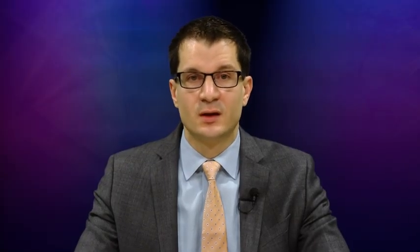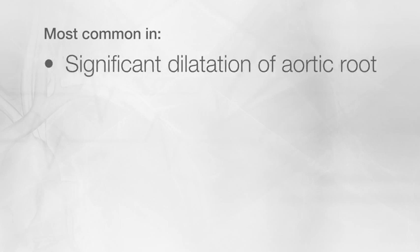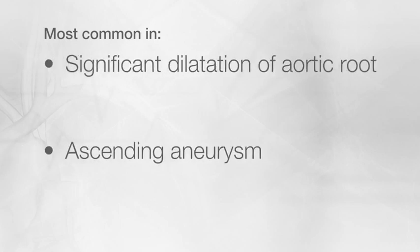There are a variety of reasons why the aortic valve can leak. Most commonly, this results from a structural abnormality of the valve itself. This can be a congenitally abnormal valve, like a unicuspid valve or a bicuspid valve. Alternatively, this can be an acquired condition where there's previous infection of the valve or endocarditis. In some cases, there can be significant leakage even in the setting of a structurally normal aortic valve, most commonly if there's significant dilatation of the aortic root or an ascending aneurysm.